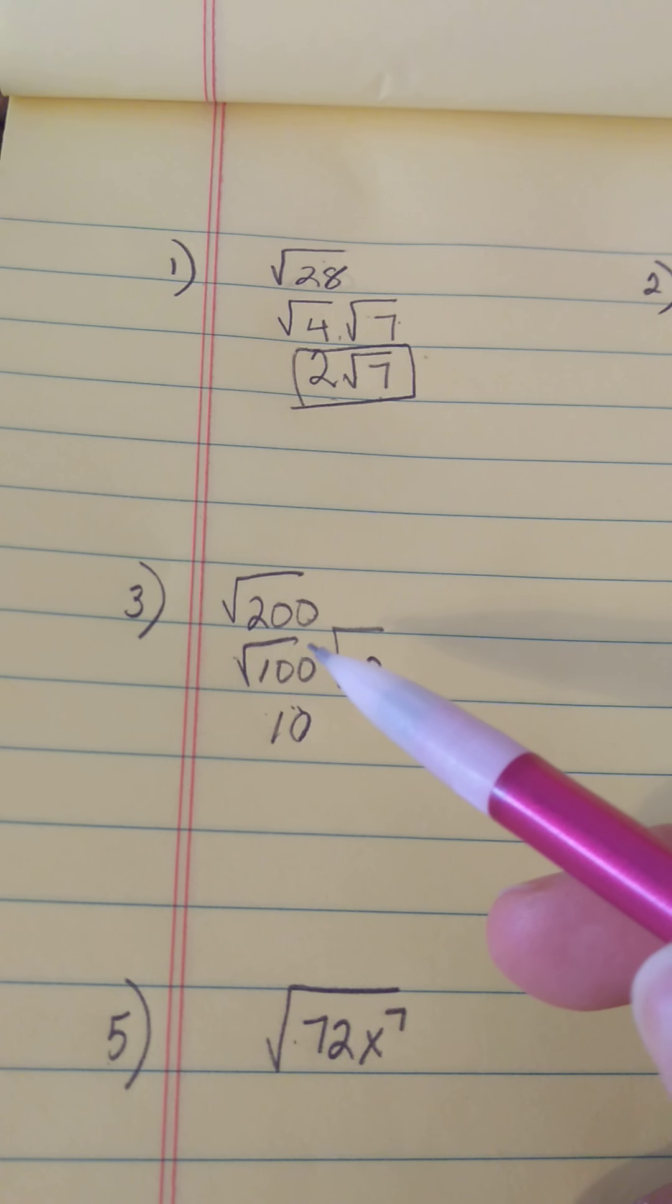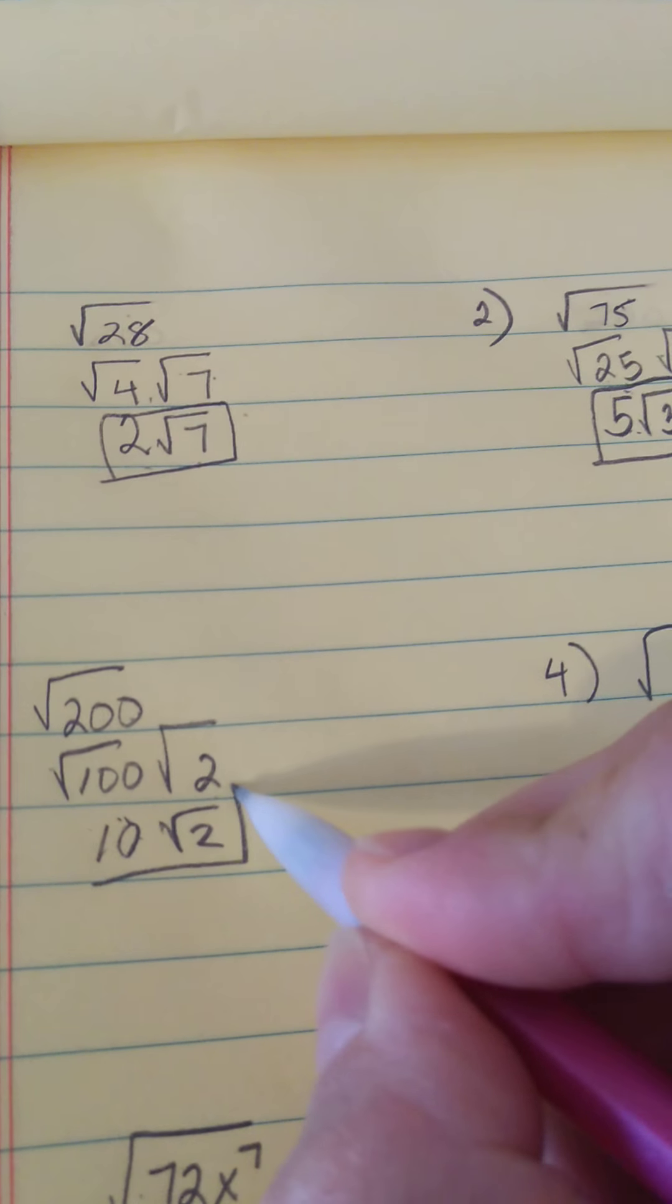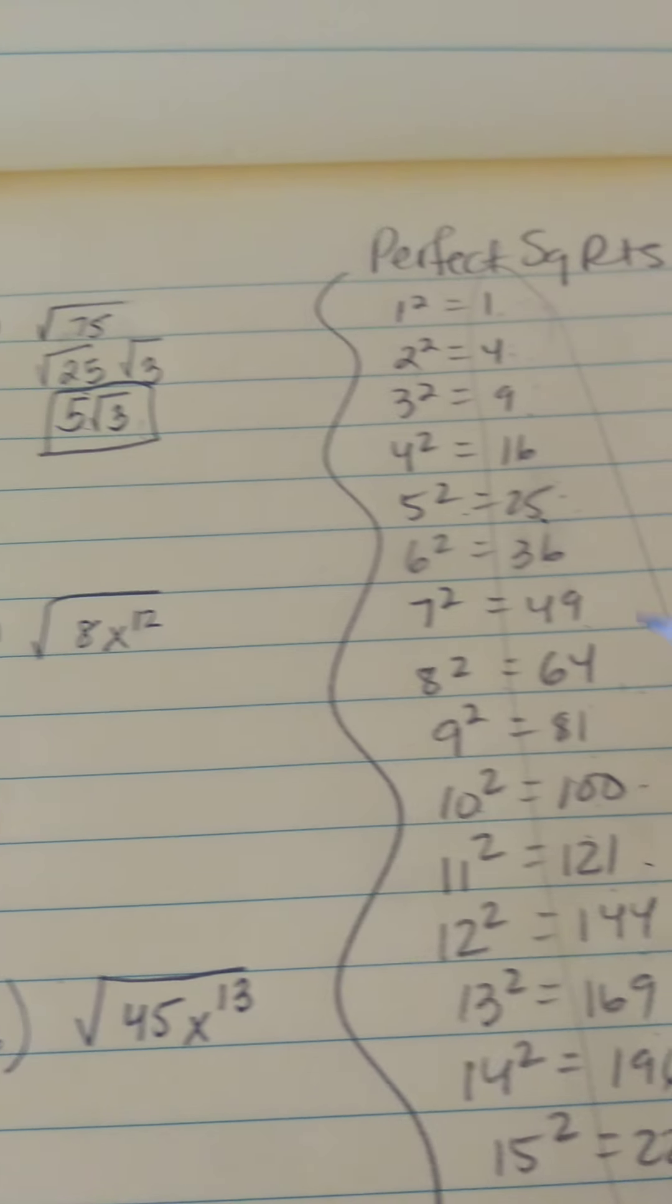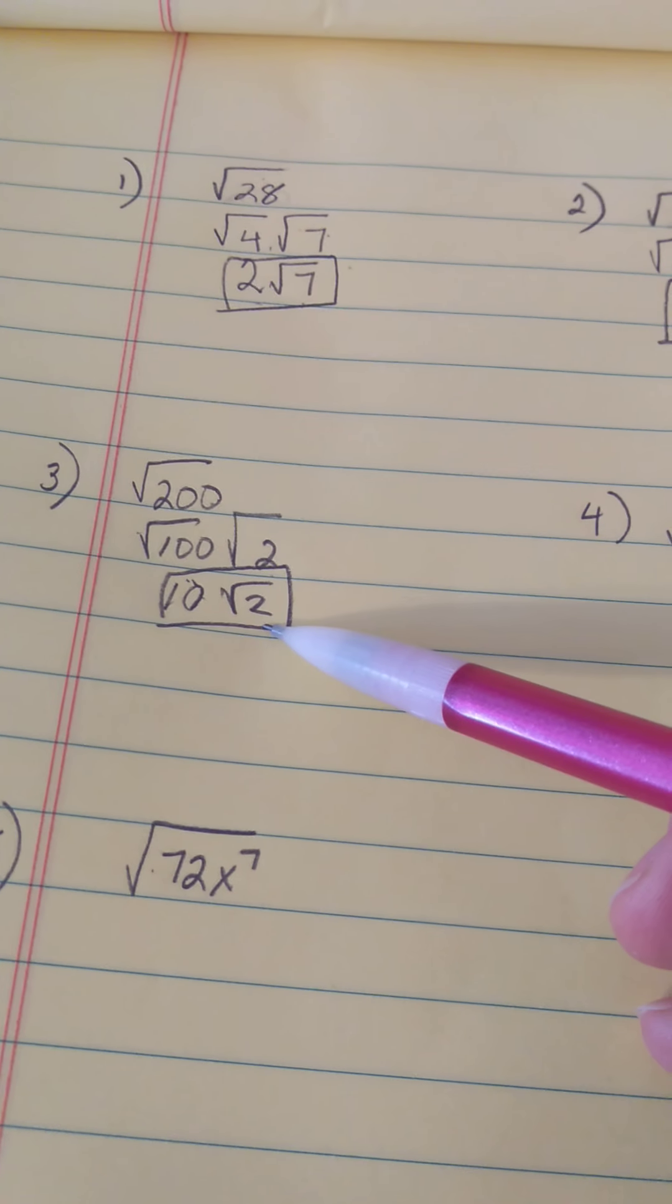So we're back to this one where the square root of 100 turned into 10. The 2 does not have any other perfect square root that divides evenly into it except for 1. So that's why we keep it under the radical.